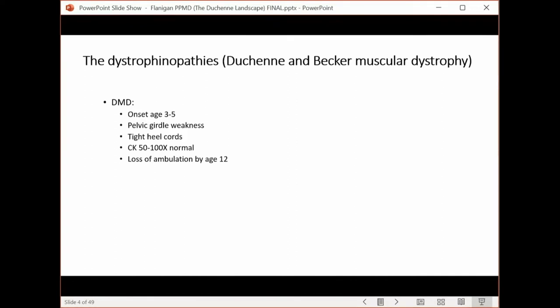Duchenne muscular dystrophy is a disease with onset around age three to five years old, often presenting at that time with pelvic girdle weakness seen as difficulty arising from the floor or tight heel cords, a serum creatine kinase of 50 to 100 times normal, and then in the age before steroids, associated with loss of ambulation around the age of 12.